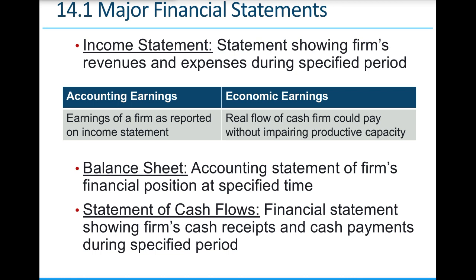The balance sheet is an accounting statement that looks at financial position at a particular point in time. It stops time and asks: what assets do you have, what liabilities do you have, and what's the remaining equity? It's only good for that particular moment because the next day things can change. It's called the balance sheet because assets must equal liabilities plus equity. The third major financial statement is the statement of cash flows, which measures cash going in and out through operations, investing, and financing.